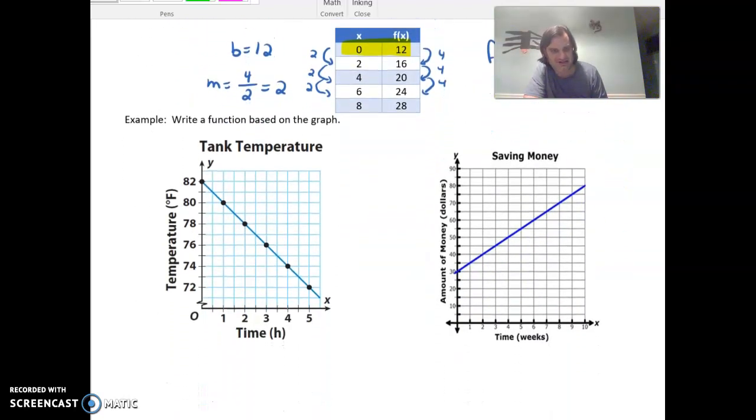So a variety of ways we can start writing these functions. If we don't have words, we can have tables. And lastly, down here, where we started this journey, we can have graphs. So we're going to write a function based on the graph. So let's see here. This first one here is a temperature over time. So initially, when the time is 0, we have that the temperature is 82. And then that would be the starting amount, or b.